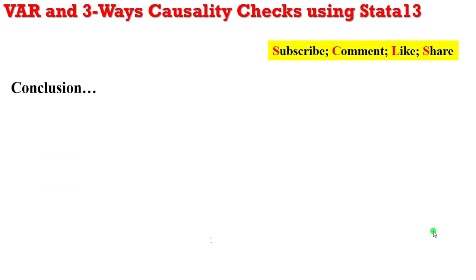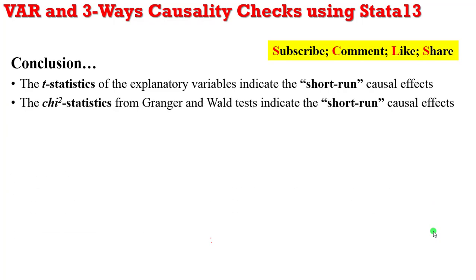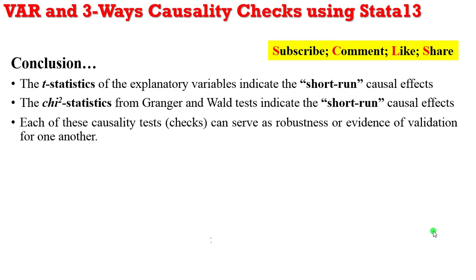So in conclusion, the t statistics of the explanatory variables will always indicate short-run causal effects. The chi-square statistics from either the Granger and the Wald test will also indicate short-run causal effects. Know that each of these causality checks can serve as robustness or evidence of validation for one another.